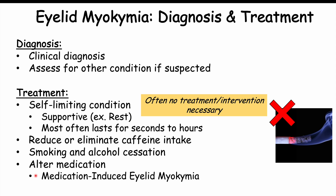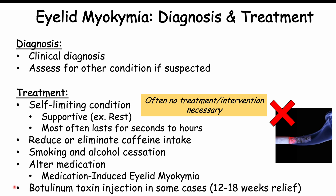In cases of medication-induced eyelid myokymia, the offending medication may be modified. In very refractory cases that do not resolve on their own, or in patients with chronic eyelid myokymia, a botulinum toxin injection may be utilized, which typically provides about 12 to 18 weeks of relief.